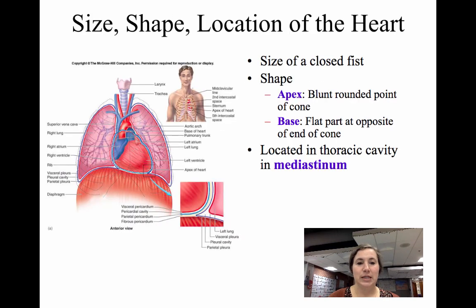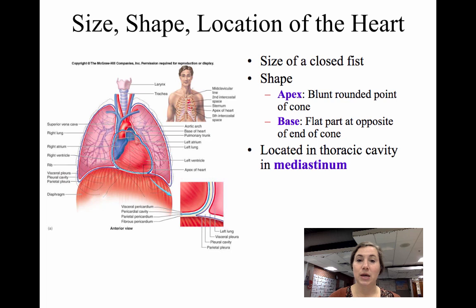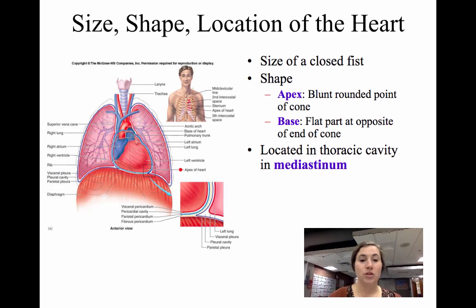The location of the heart is in the mediastinum — the middle part of the thoracic cavity that does not include the lungs. It's about the size of a closed fist, which seems very small for the job it does. Its shape includes the apex, the blunt rounded point at the bottom, and the base, which is actually at the top — the flat part opposite the apex.